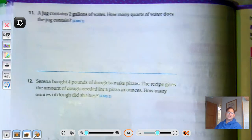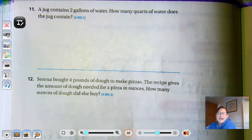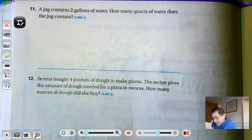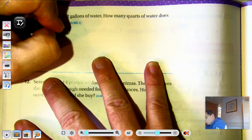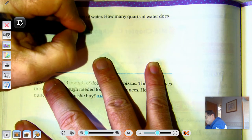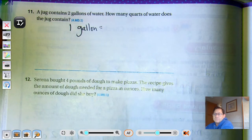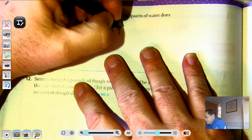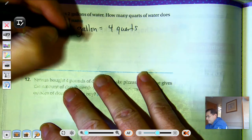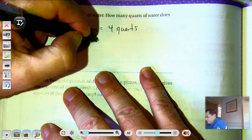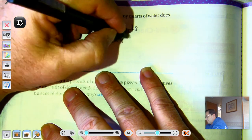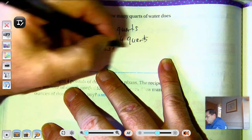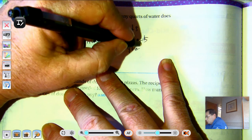Number 11. A jug contains 2 gallons of water. How many quarts of water does the jug contain? So 1 gallon - how many quarts? 1, 2, 3, 4. Four quarts in 1 gallon. So 2 gallons would be 2 times 4 quarts. 2 gallons equals 8 quarts.